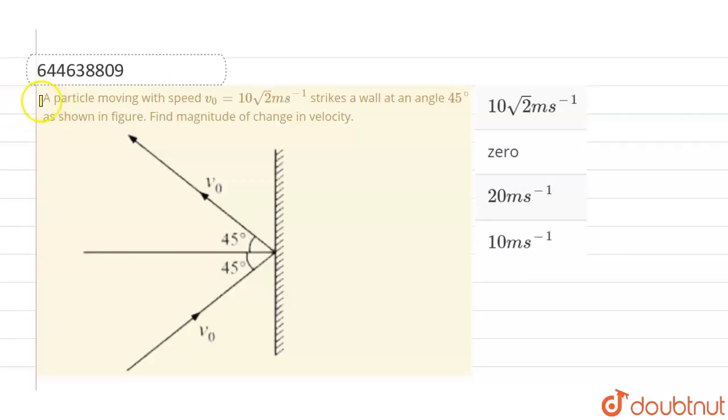Hello everyone. If we talk about this question, this given question is a particle moving with speed v0 equals to 10 root 2 meter per second strikes a wall at an angle of 45 degree as shown in the figure.